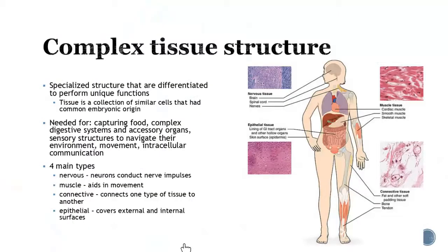Now there are a few key things I want to hit on. First is complex tissue structure. A tissue is a specialized structure of differentiated cells that can perform a unique function. With tissue, you're going to see a collection of similar cells that had a common embryonic origin — and on the next slide I'll explain what that embryonic origin means when it comes to development.